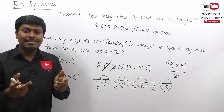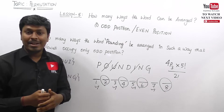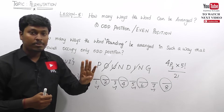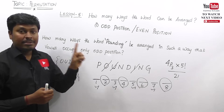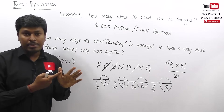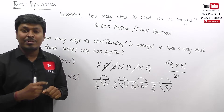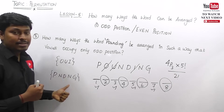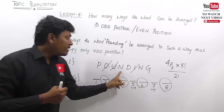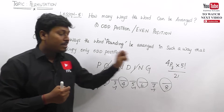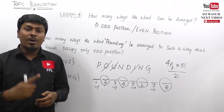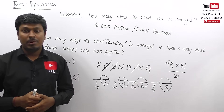The final answer for POUNDING is 4P3 × 5!/2!. Remember: find the odd positions, place the vowels using nPr, count remaining places for consonants using factorial, and divide by the factorial of any repeated letters — as covered in Lesson 1. This completes Lesson 5 on odd and even position permutations.